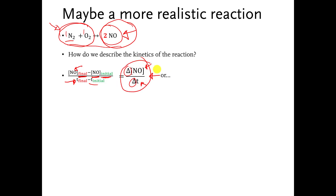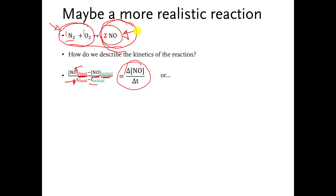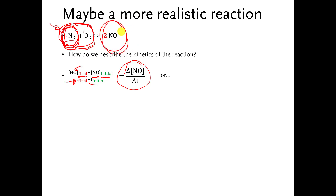I don't have to describe the reaction this way though — there's an OR here. We described the speed based on how fast the concentration of NO is changing, but we could also describe it differently. We could describe how fast the N2 is disappearing, since we're starting with a bunch of N2 and O2 and watching them convert into NO. So we could describe the speed of the reaction based on how fast the reactants disappear rather than how fast the products accumulate.